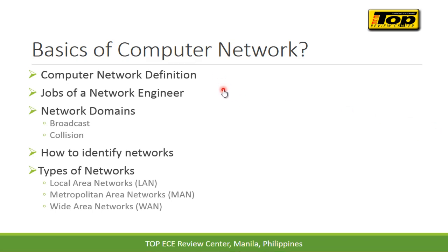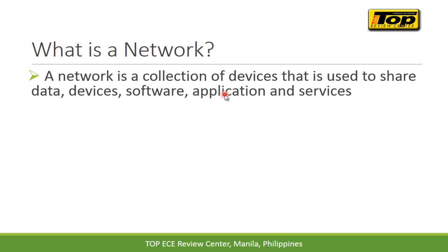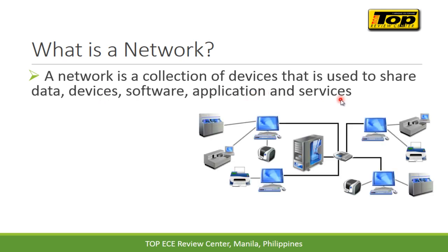Let's start with the definition of a network or computer network. A network is basically a collection of devices used to share primarily data and other devices — for example, your printer and your IP cameras being shared in a network — as well as software, courses, applications, and other services. This is an example of a network.